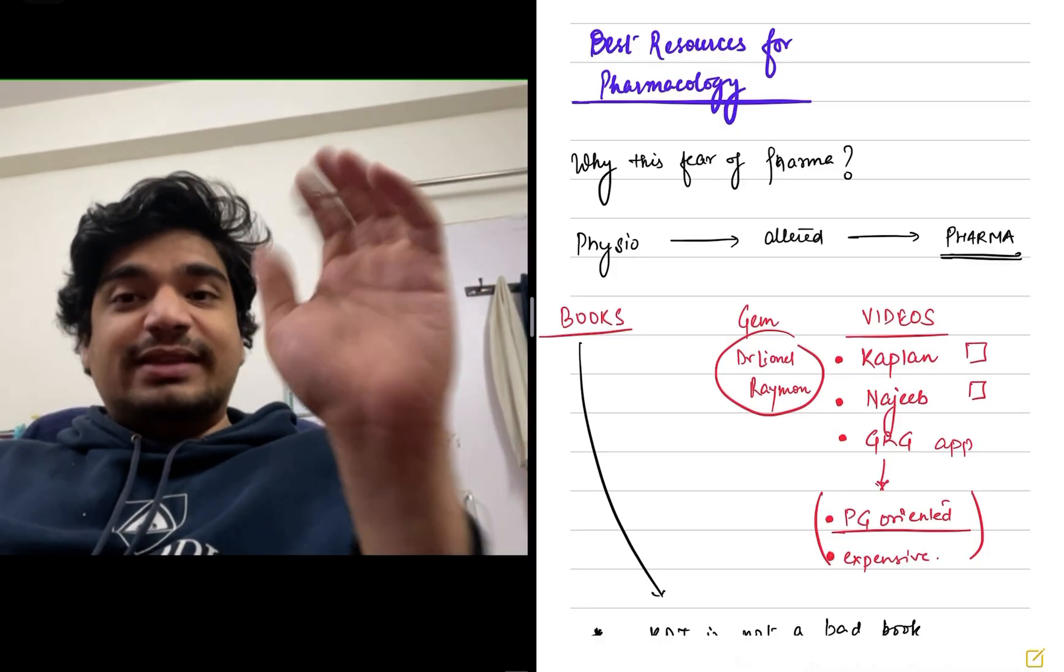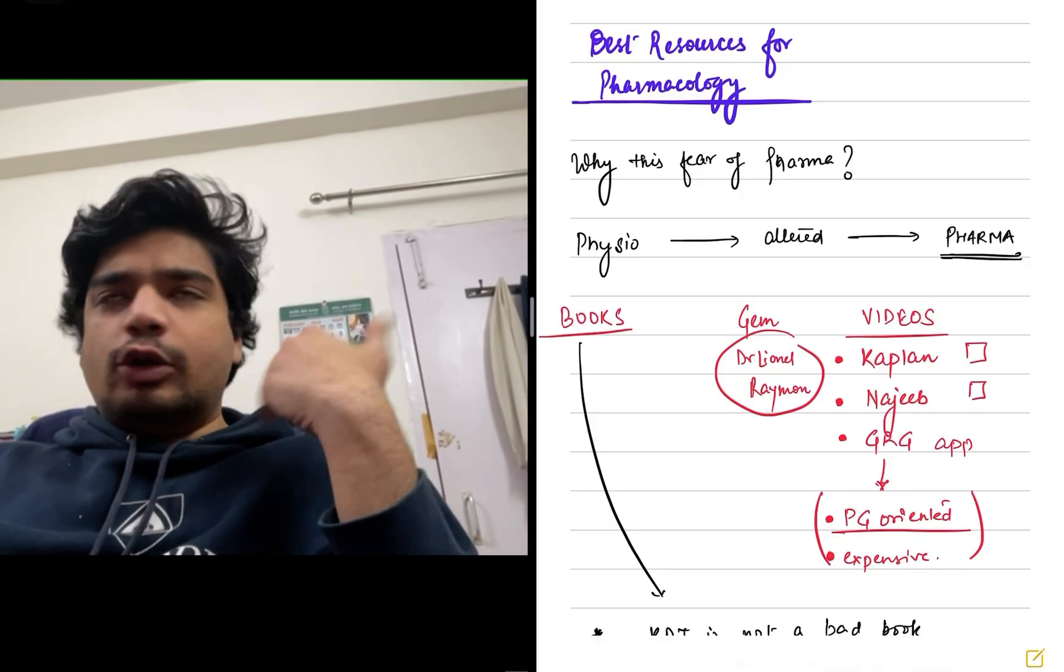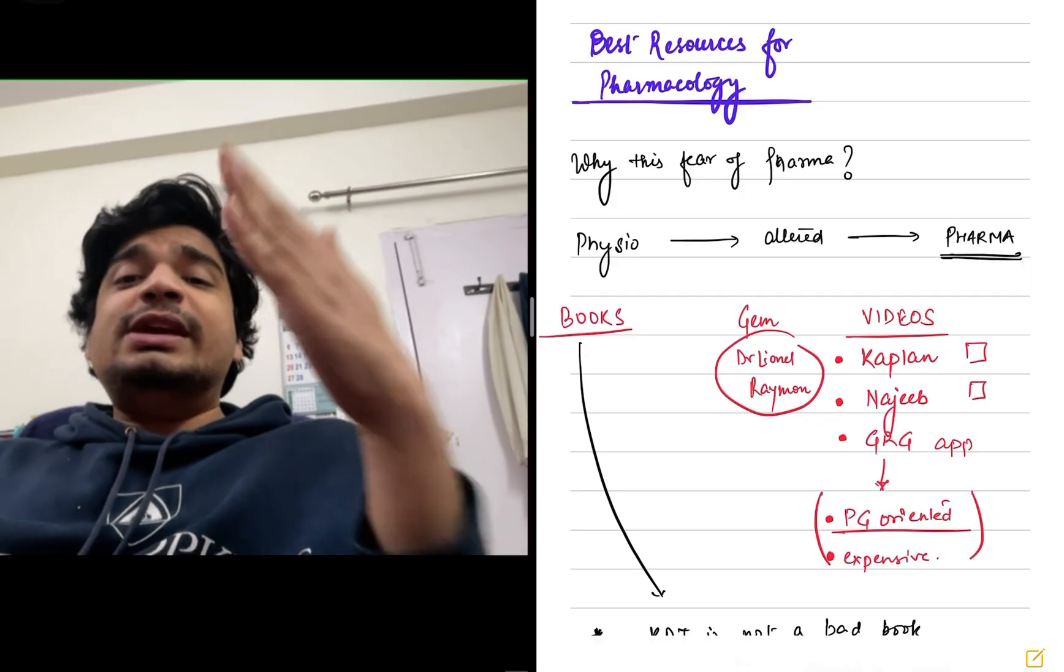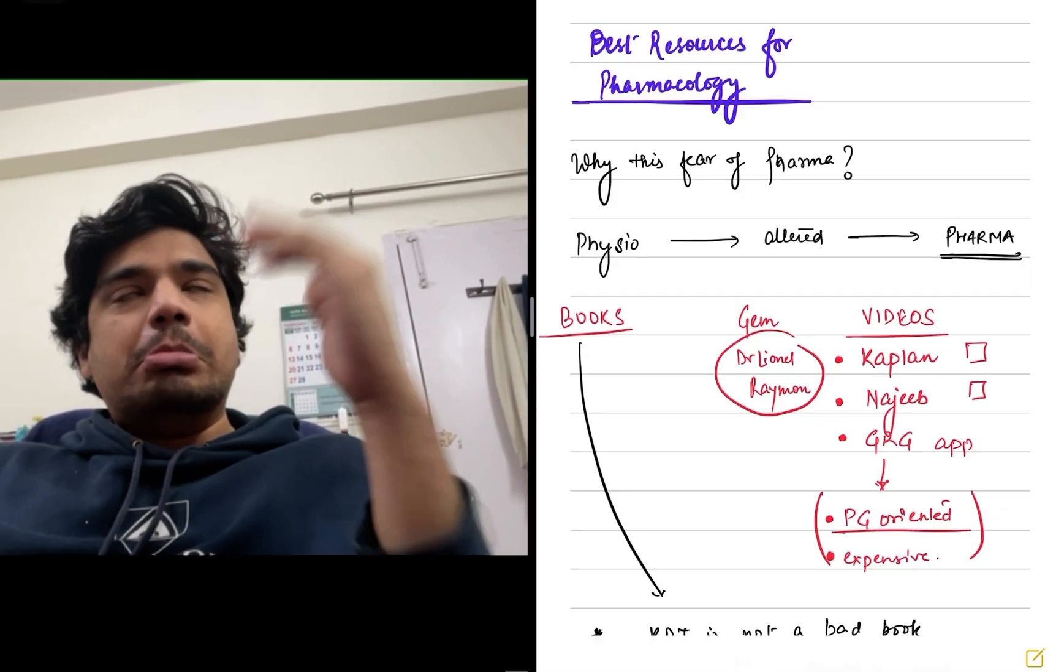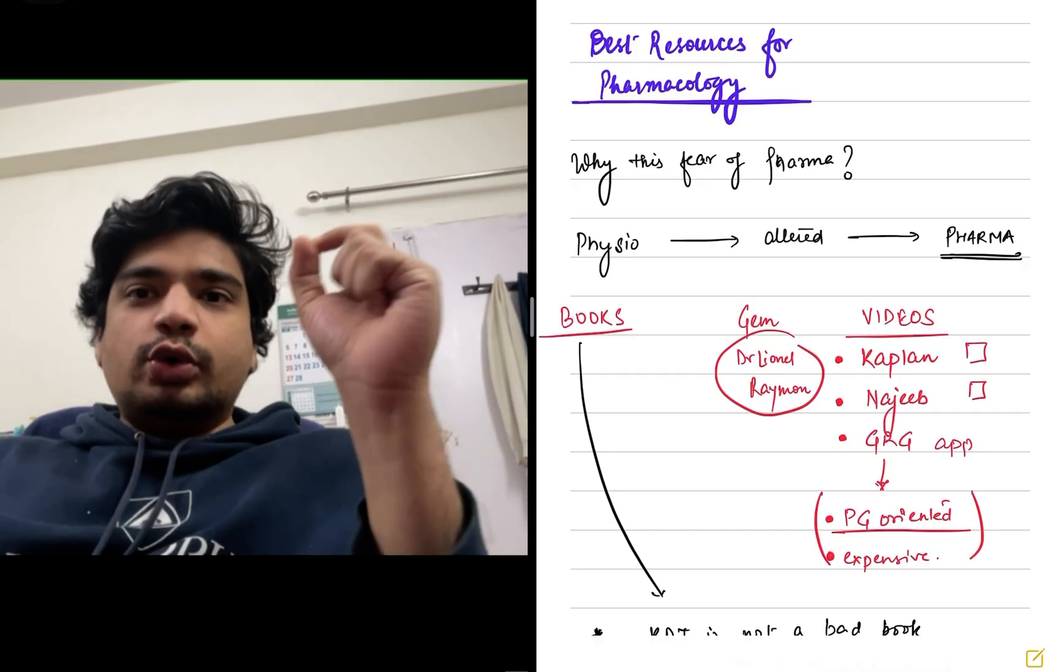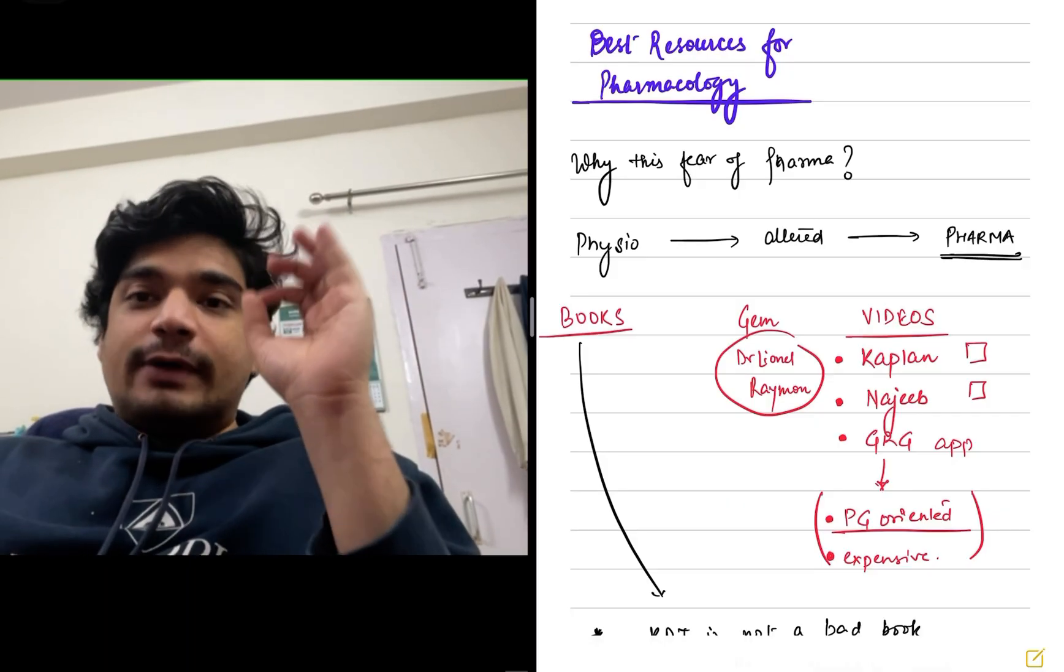Now, coming to the best resources as far as pharmacology is concerned, I'll first focus on video resources, because almost everyone wants to watch videos and then make notes. For me, the best resource is Kaplan. I have talked about this multiple times in my previous videos that Kaplan is the go-to resource. Kaplan videos are the go-to resource by Dr. Lionel Raymond, as far as pharmacology is concerned.